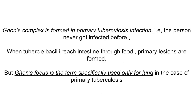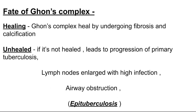Ghon's complex is formed in primary tuberculosis infection. Primary tuberculosis means the person has never been infected before — it is the first time the tubercle bacilli are entering their body. When tubercle bacilli reach the intestine through food, primary lesions are created there also, but we do not call them Ghon's lesions. The word 'Ghon's' is specially used in the case of lung primary tuberculosis.